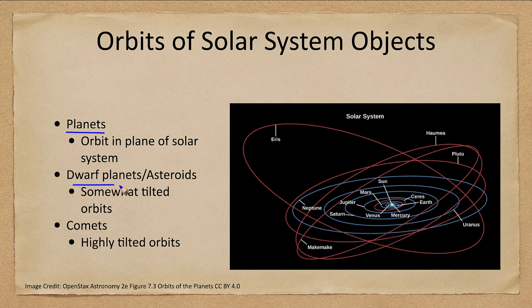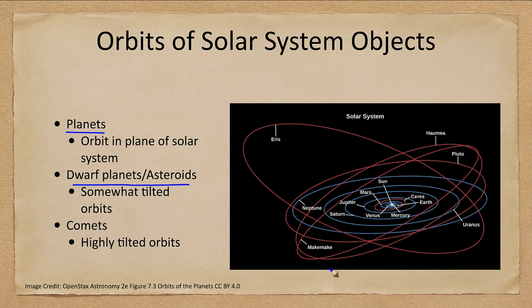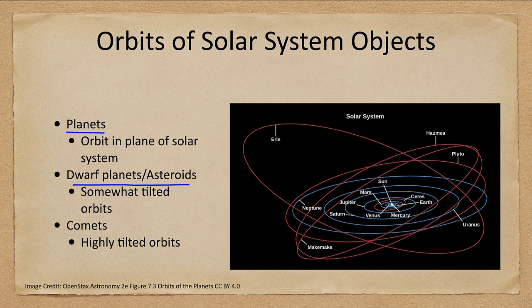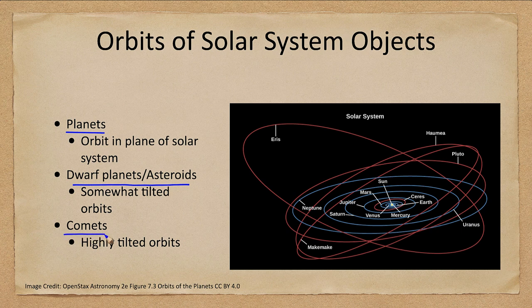When we look at things like dwarf planets and asteroids shown in the red here, we start to get to orbits that are a little bit tilted. Not always horribly tilted, but much more tilted than what we see with the eight planets themselves. And not shown in here are comets. Comets would have highly tilted orbits and could come in in any direction. And in fact, sometimes they're so tilted that they're coming in backwards.